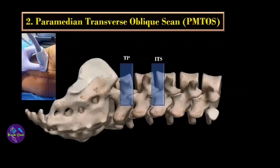The next approach is the paramedian transverse oblique scan. Here, rotate the probe 90 degrees from the previous probe position and you will have two windows: one through the transverse process and the other through the inter-transverse space. Since we cannot see beyond the transverse process, we choose the inter-transverse space window to visualize the lumbar plexus.